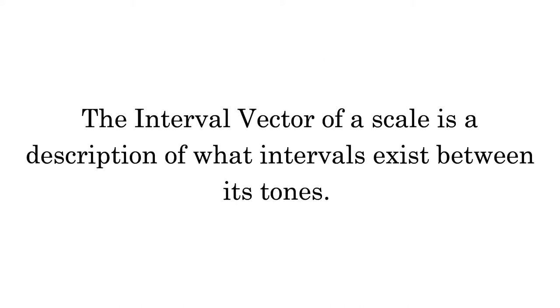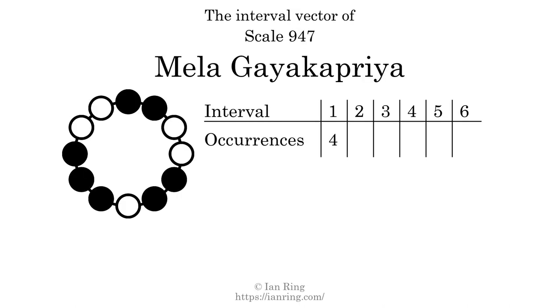The interval vector of a scale is a description of what intervals exist between its tones. There are four intervals with the size of one semitone. They are here, here, here, and here.